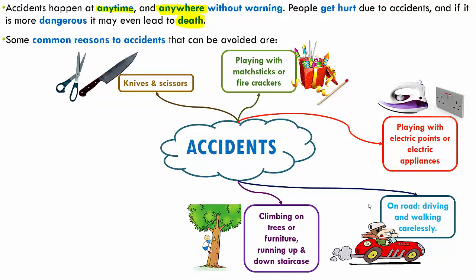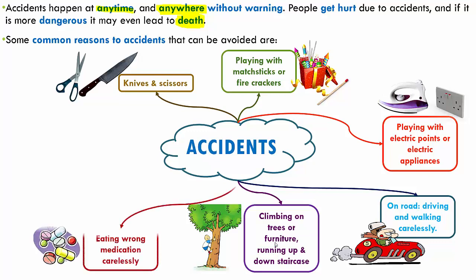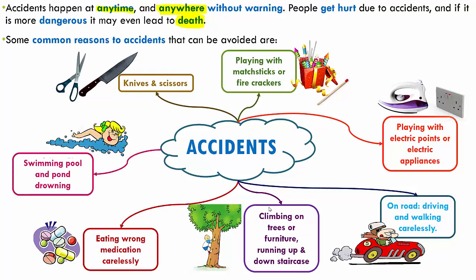Another reason accidents could happen is while climbing trees, being naughty, or running up and down the stairs. These can lead to severe accidents — if you slip and fall, you can end up with broken bones. Another very dangerous situation is eating wrong medication. If the doctor has prescribed some medication, take only that, as wrong medication can lead to serious consequences. And accidents can also happen at a swimming pool or pond — while swimming carelessly, it can lead to drowning.